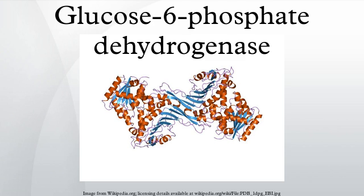Glucose-6-phosphate dehydrogenase is stimulated by its substrate glucose-6-phosphate. The usual ratio of NADPH to NADP+ in the cytosol of tissues engaged in biosynthesis is about 100 to 1. Increased utilization of NADPH for fatty acid biosynthesis will dramatically increase the level of NADP+, thus stimulating G6-PD to produce more NADPH. G6-PD converts glucose-6-phosphate into 6-phosphogluconolactone and is the rate-limiting enzyme of the pentose phosphate pathway.